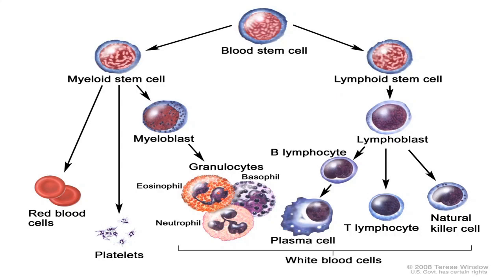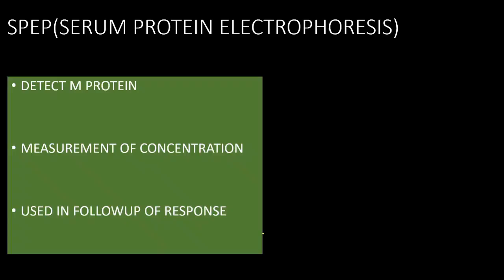This diagram shows how plasma cells are derived from bone marrow precursors: lymphoblasts, B lymphocytes, and plasma cells. These abnormal plasma cells can secrete excessive amounts of monoclonal immunoglobulin — either both light and heavy chains in combination, or only the light chain, or only the heavy chain.